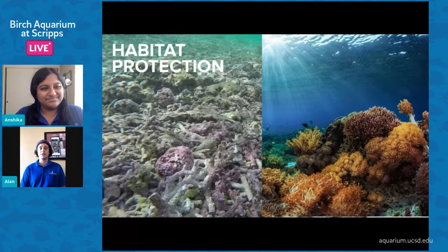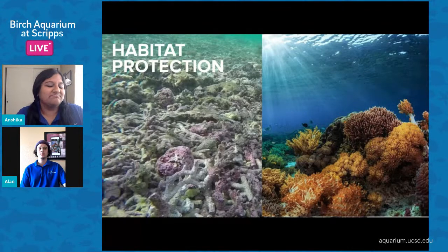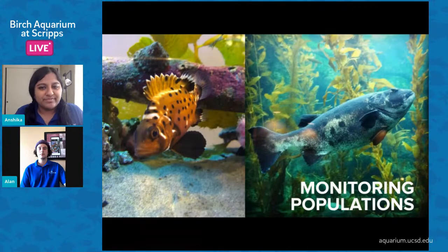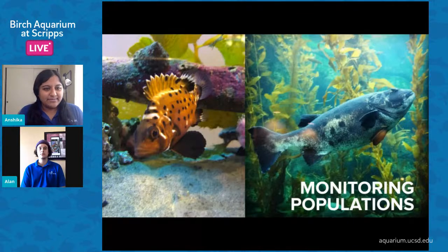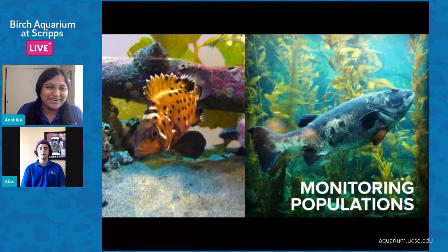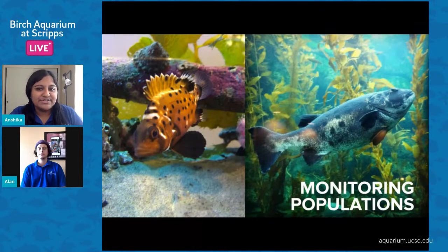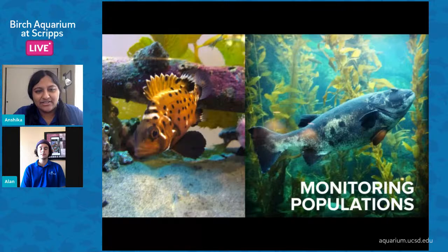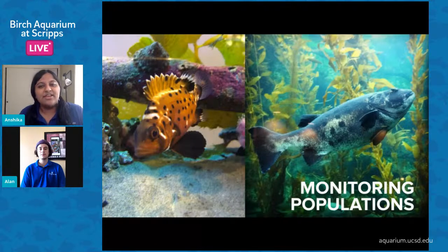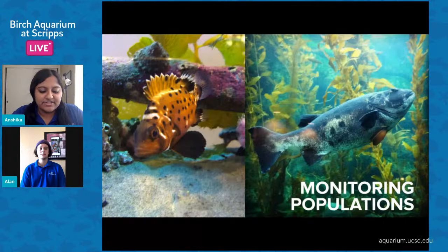Another way to measure MPA success is monitoring populations. A big goal of MPAs is protecting animals, so scientists track how baby animals survive and grow up to become adults. This giant sea bass at our aquarium is a great example — they're a very long-lived species, and it takes them a long time to grow up and reproduce. When establishing an MPA, scientists have to keep in mind that some animals take decades to mature, so you may not see the full effect of an MPA for 30, 40, or even 50 years.